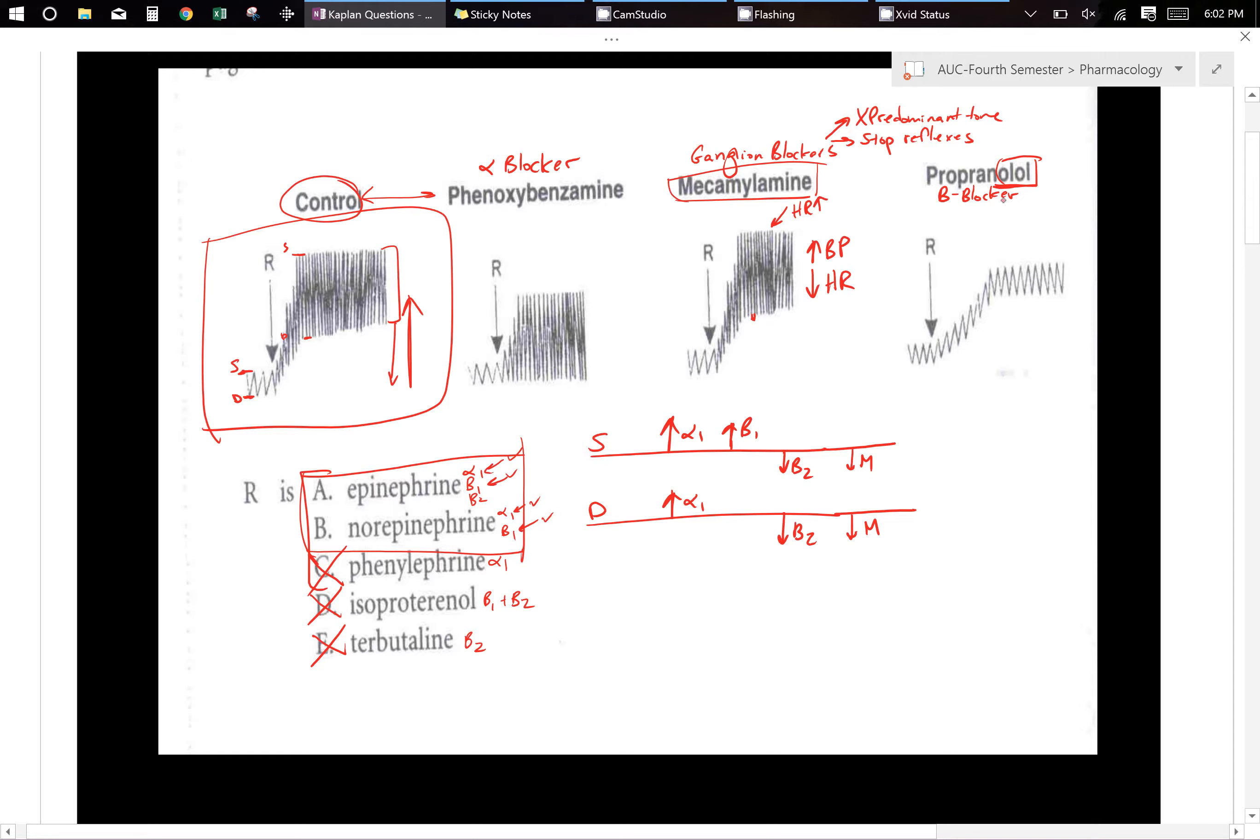And let's take a look at propranolol. So propranolol is a beta blocker. So when you eliminate both betas, beta 1, beta 2, if you eliminate them...